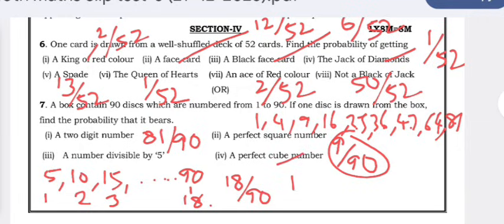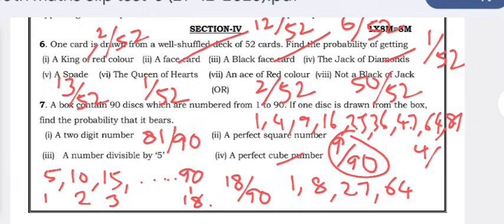A perfect cube number — the perfect cubes from 1 to 90 are 1, 8, 27, and 64. That is 1³, 2³, 3³, and 4³. Since 5³ = 125 > 90, there are only 4 perfect cubes. So the probability of getting a perfect cube number is 4/90 = 2/45.